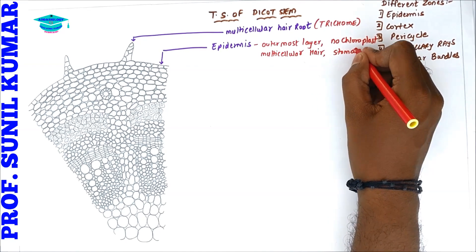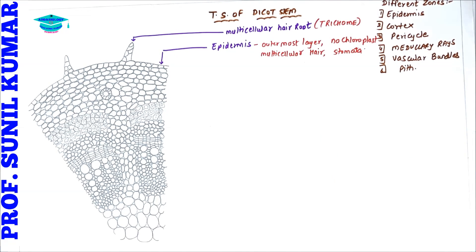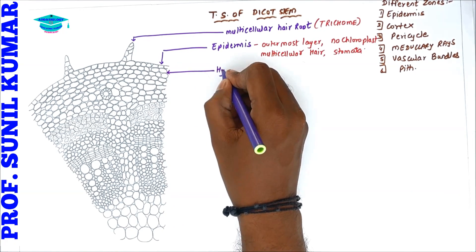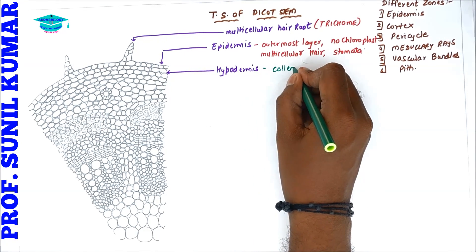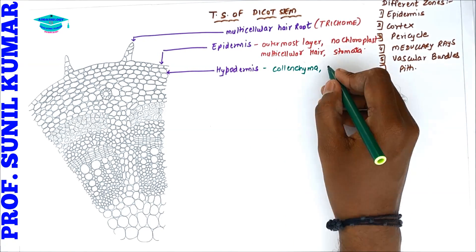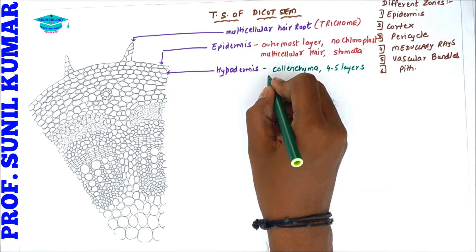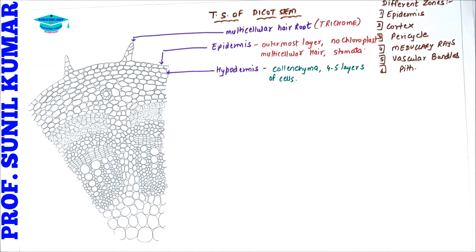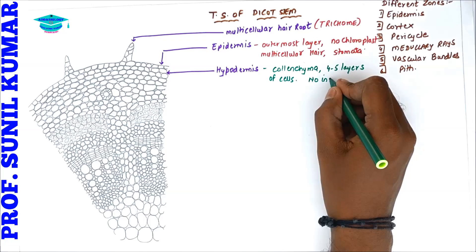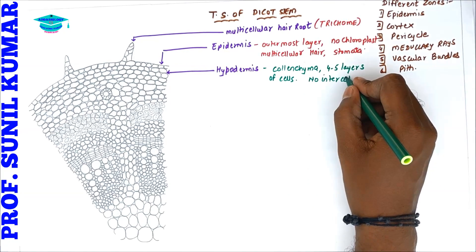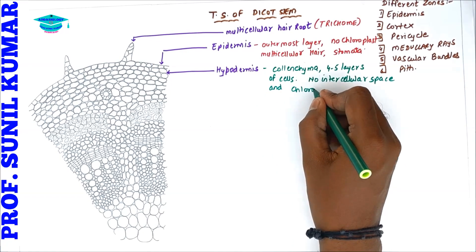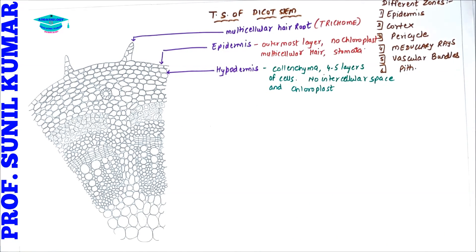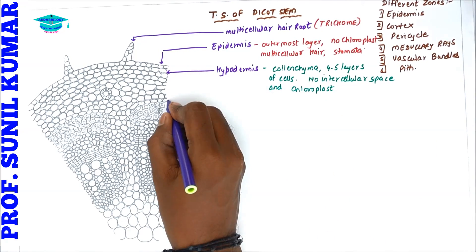Below the epidermis there is a thin layer called the hypodermis — 'hypo' means below, so hypodermis is below the epidermis. It is made up of collenchyma cells, with four to five layers. There is no intracellular space between the cells and no chloroplast, meaning all cells are intact.